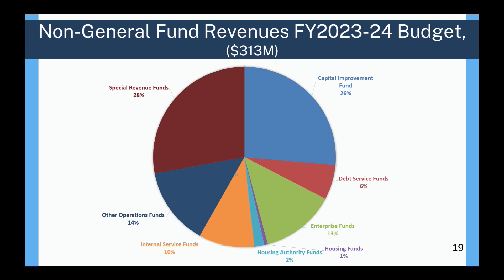Now we have the non-general fund revenues for fiscal year 2023-24, totaling $313 million. Non-general fund revenues consist of: capital improvement funds at 26%, special revenue funds at 28%, other operation funds at 14%, debt service funds at 6%, enterprise funds at 13%, housing funds at 1%, and housing authority funds at 2%.